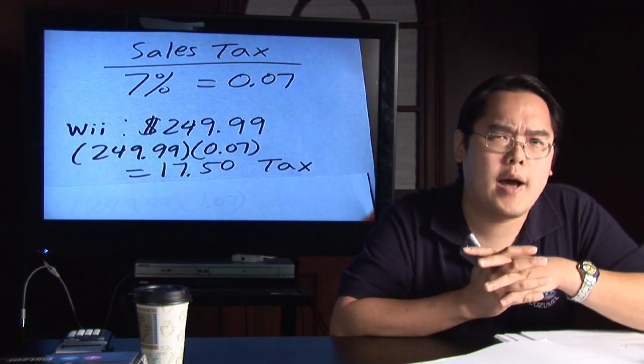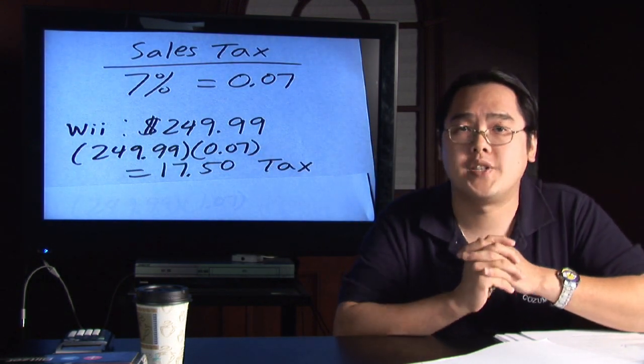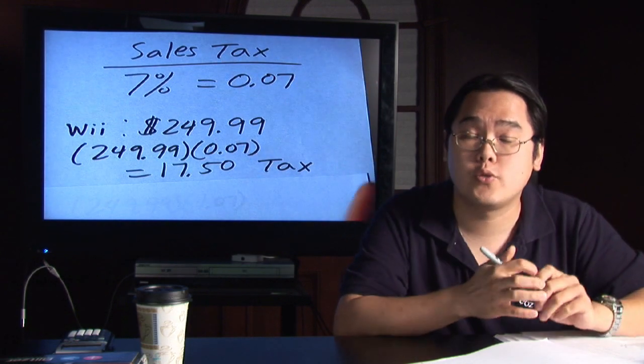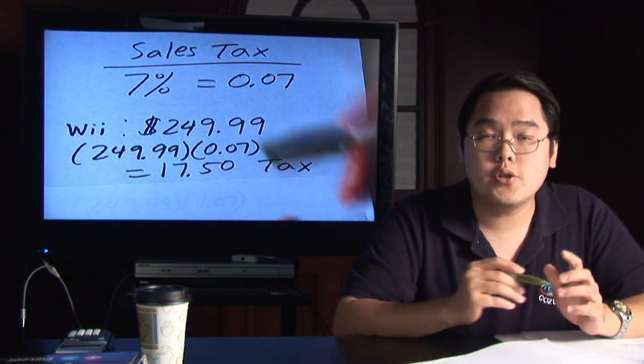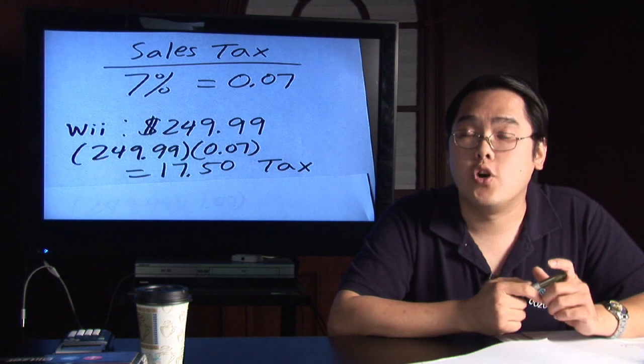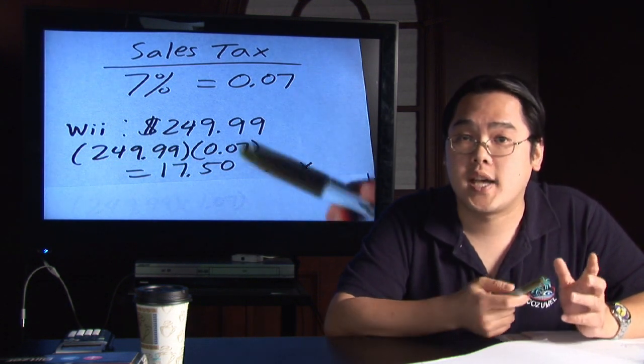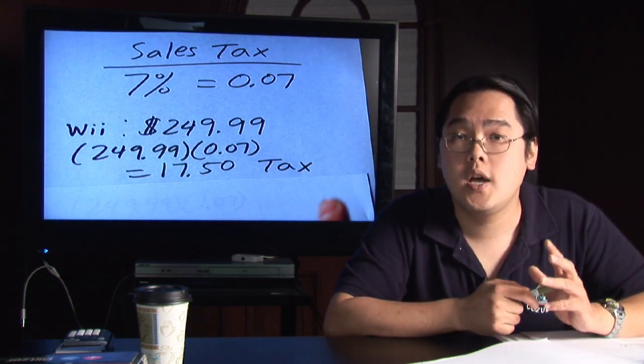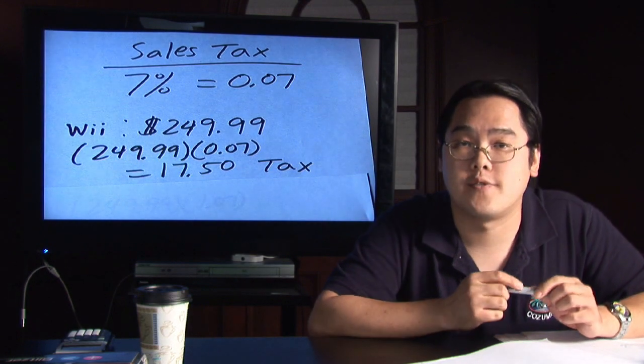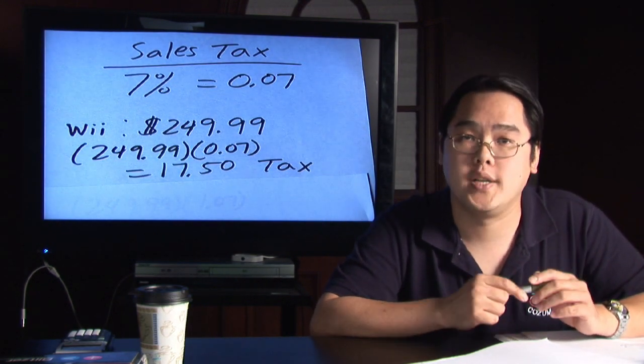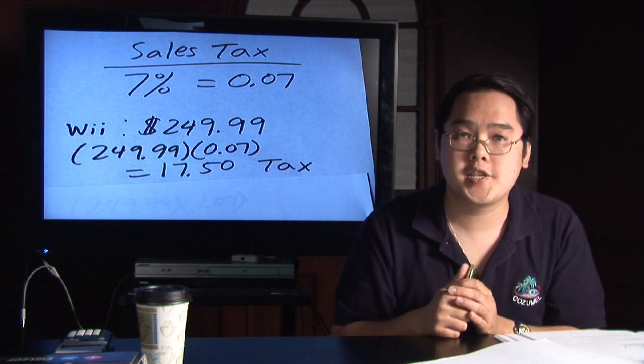But what if you wanted to figure out how much you would be paying ahead of time with tax as well as the total amount with tax included? Well, you're still doing the same thing that we just did, but you always want to be sure that instead of 0.07, put a 1 as the front number - in other words, 1.07.